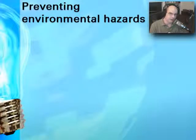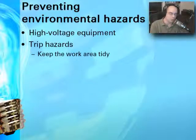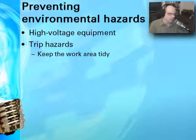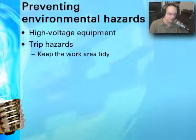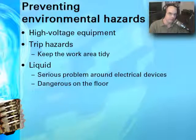How can we prevent environmental hazards? We've already talked about high voltage equipment. In the workplace, keep everything clean and tidy so you're not tripping over anything — trip and fall accidents are surprisingly common in manufacturing environments. When bringing in computer systems, put them out of the way so people don't trip over them. When working with electrical devices, liquid is also a problem. Many server rooms have signs saying no liquids, no drinks, no food — spills are dangerous to electrical equipment and can cause slip-and-fall accidents.